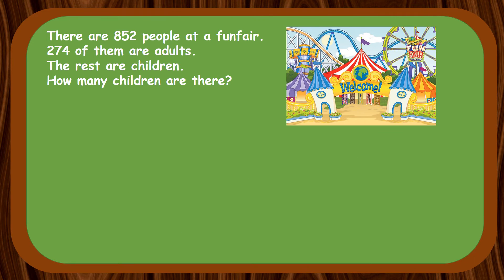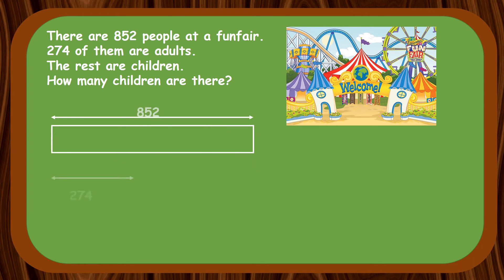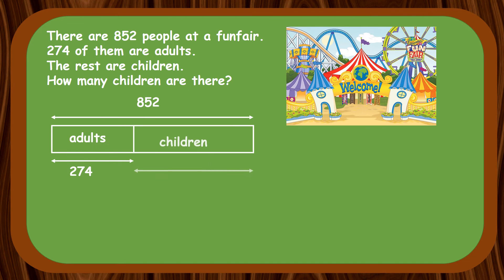There are 852 people at a fun fair. 274 of them are adults. The rest are children. How many children are there? Draw the model to show the relationship between the number of people at the fun fair, the number of adults and children. To find the number of children, we need to find the difference between the total number of people and the number of adults. 852 minus 274.